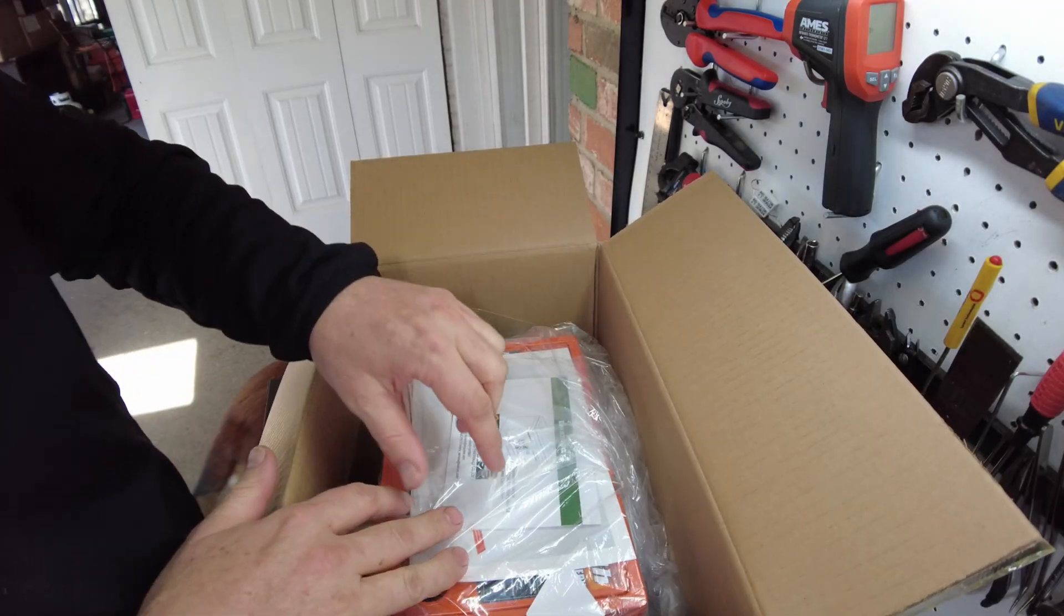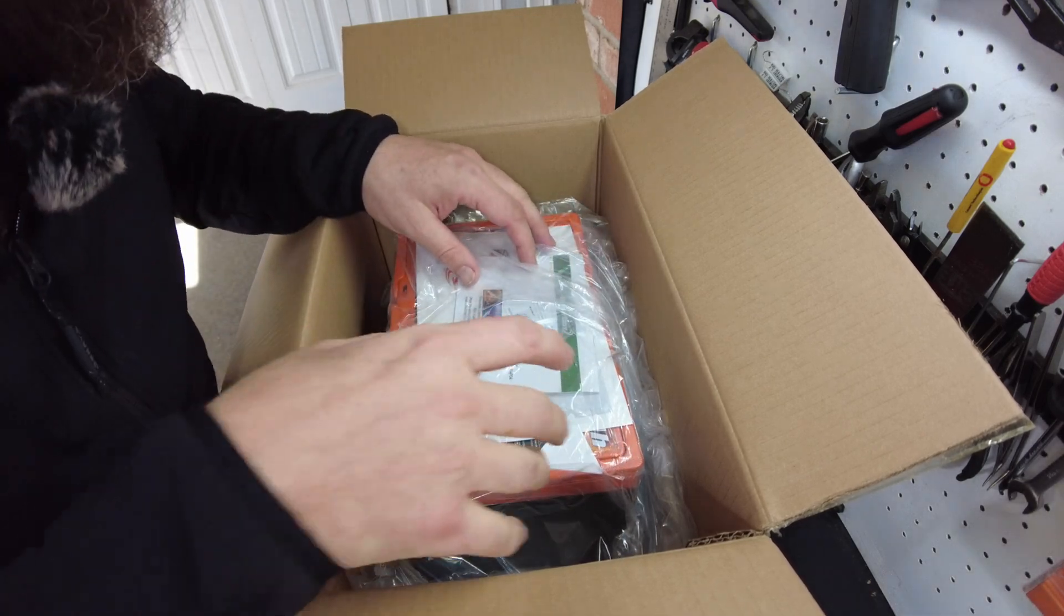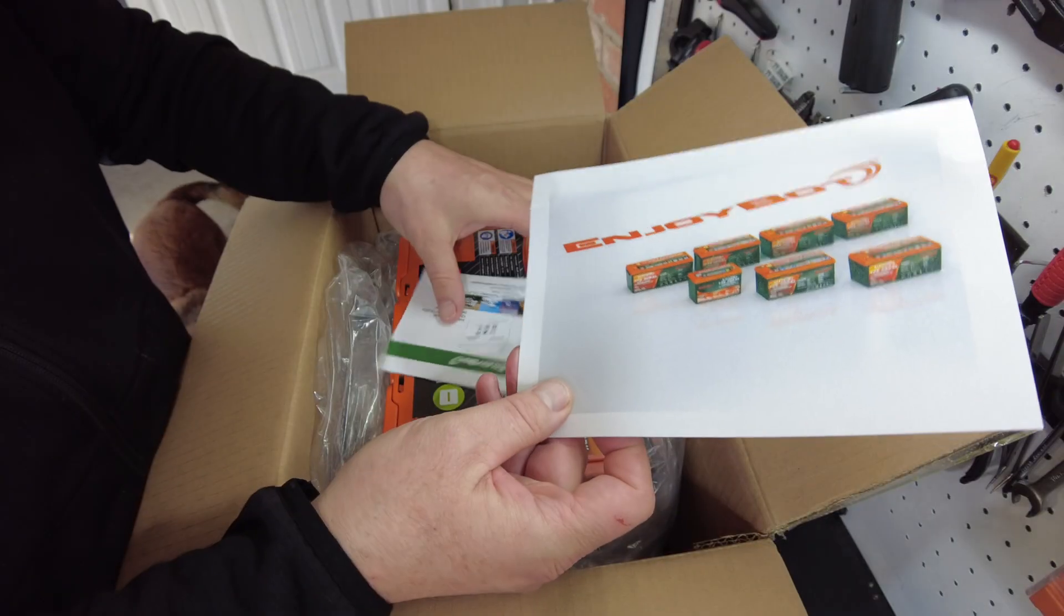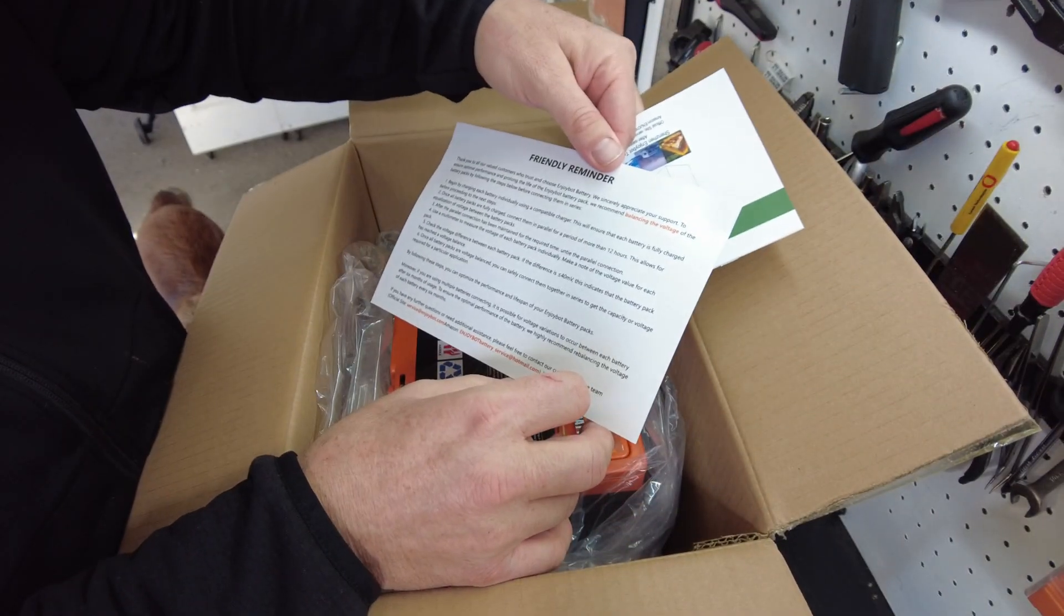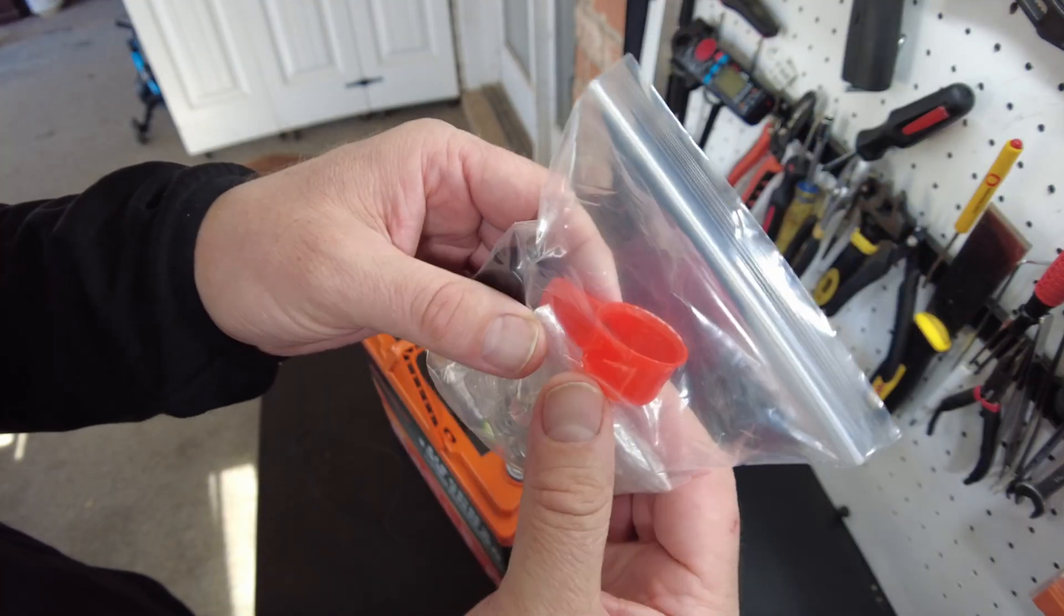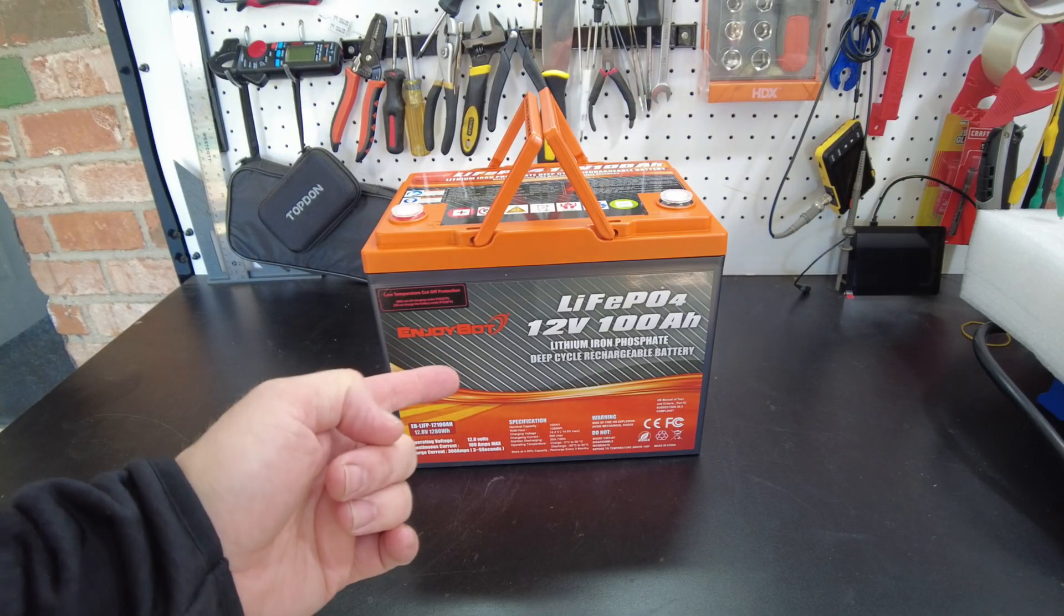Oh check it out. So I think this is a group 24 battery. There's a manual and some kind of reminder card. We got our terminal bolts and some terminal covers, and there's the battery.